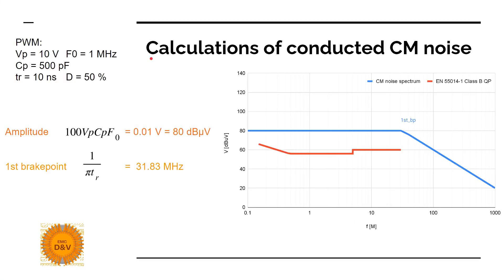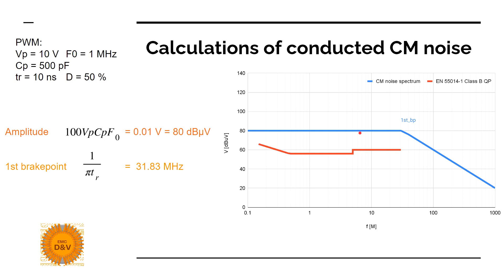For the calculation of conducted common mode noise, we use the same signal, with an added parasitic capacitance of 500 pF. The amplitude equals 0.01 volt, which is 80 dBmicrovolts. The only breakpoint is 31.83 MHz — the same as the second breakpoint for differential mode noise. For a 10 nanosecond rise time, the roll-off will be above 30 MHz, meaning there is no roll-off within the conducted emission limit range, which could be problematic. The margin between the limit and the common mode noise amplitude is much smaller for this signal.